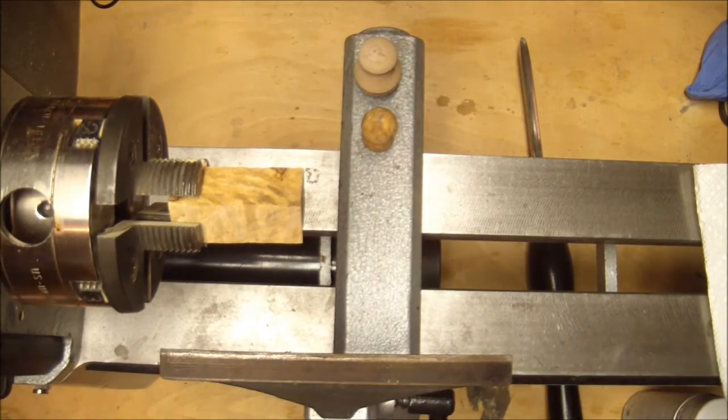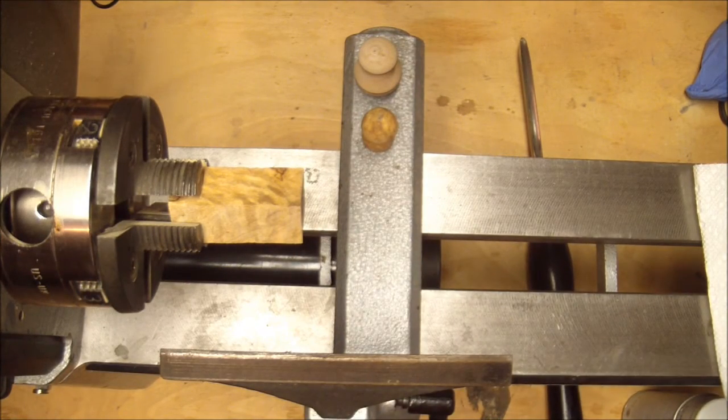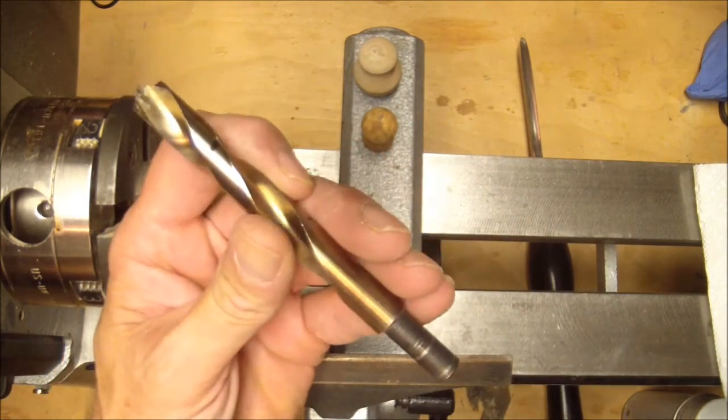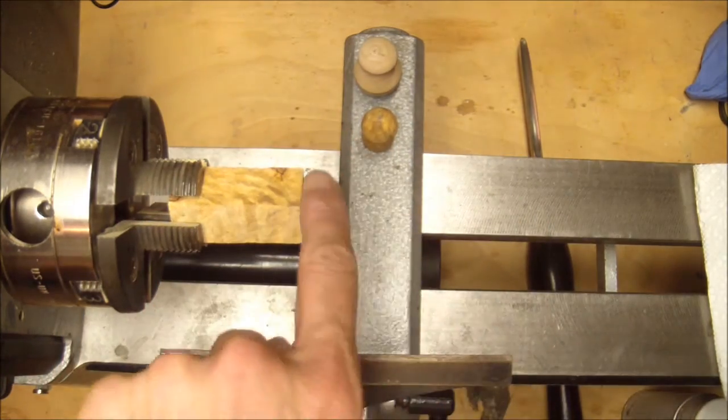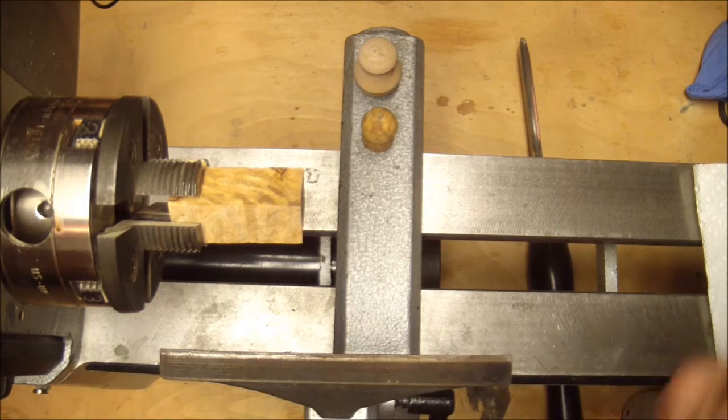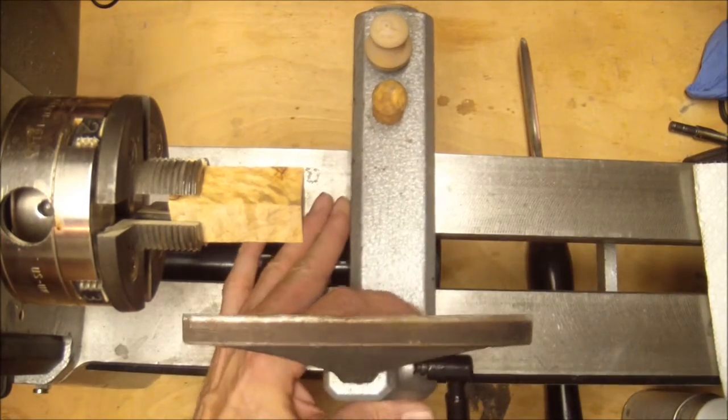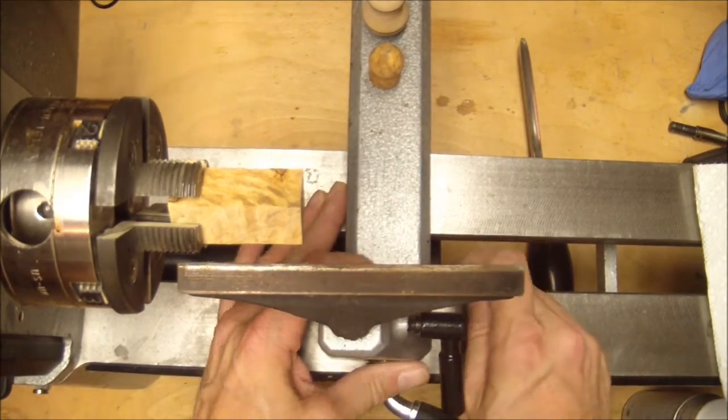And oh, the other thing that we're going to need, Jacob's chuck and a half inch drill bit. And this would be for making the hole in the end where we're pushing in the magnet. So let's set this aside.